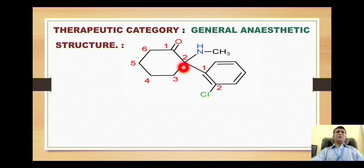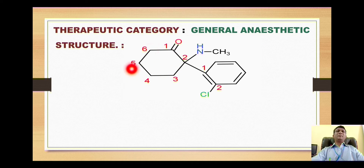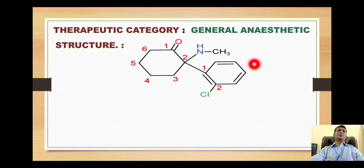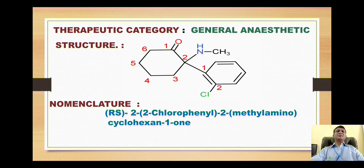In this structure we have a ketone, so for the IUPAC nomenclature our basic functional moiety will be the ketone. This is a six-membered cyclic compound attached with a doubly bonded oxygen, so we call it cyclohexanone. The carbon attached with the doubly bonded oxygen is numbered one. On position number two we have the 2-chlorophenyl substituent, and also on position two we have the methylamino group as a substituent.